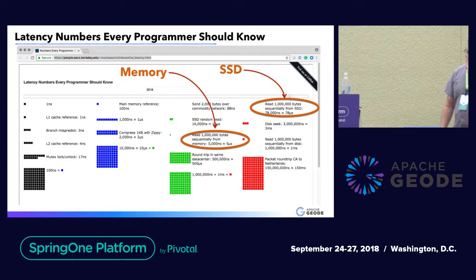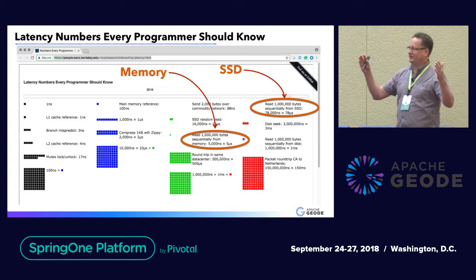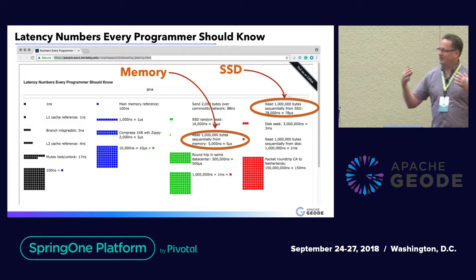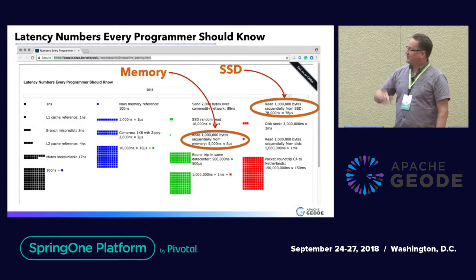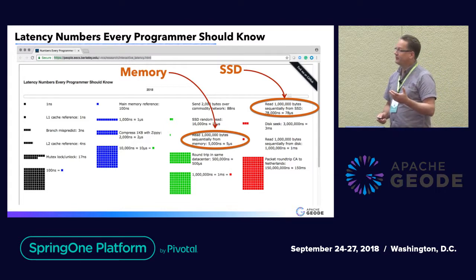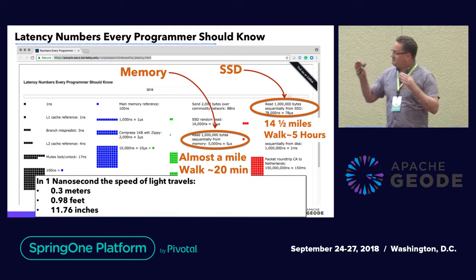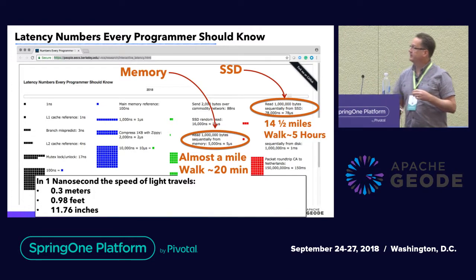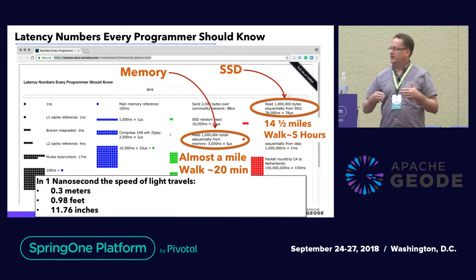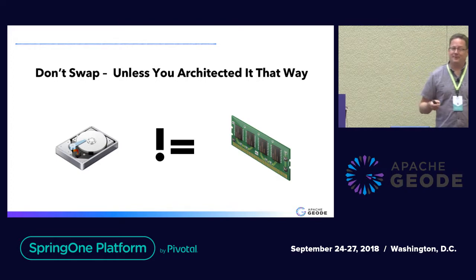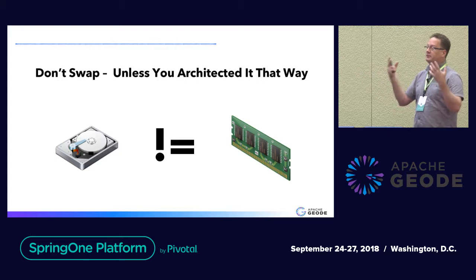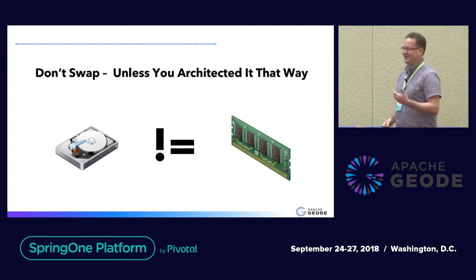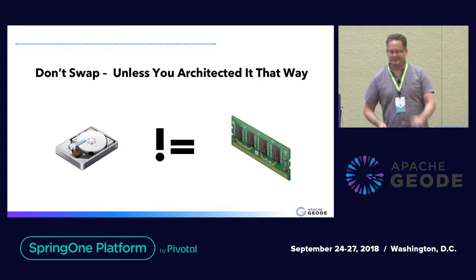So how do we think about it from a memory perspective? I think it was Grace Hopper — she had this cool thing where she talks about the speed of light. Physics comes into play. When you're swapping from memory into disk, those numbers can be translated into real measurements. If I think about memory, in that 5,000 nanoseconds I can walk almost 20 minutes — about a mile. The SSD? That's about five hours. So you just go and say: memory is not disk, so please do not swap. If you're using an in-memory data system and you're swapping, make sure you've architected it that way intentionally — but don't do it by accident. Just make sure you're sizing it properly and disk is not memory.